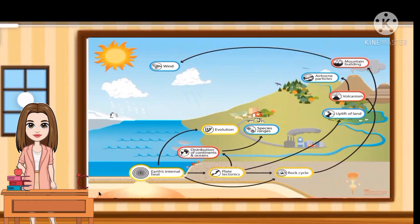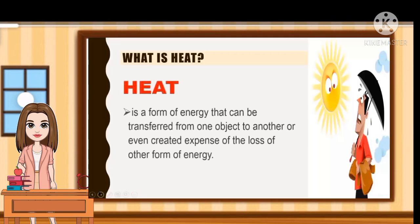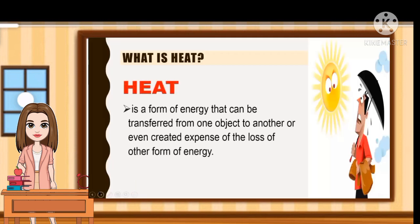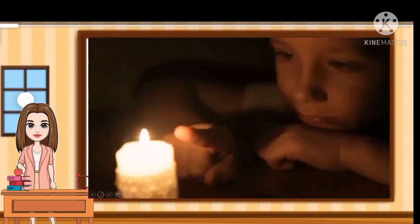To understand what heat is, let us first define what heat is. Heat is a form of energy that can be transferred from one object to another, or even created at the expense of a loss of another form of energy. It is a condition of being hot.